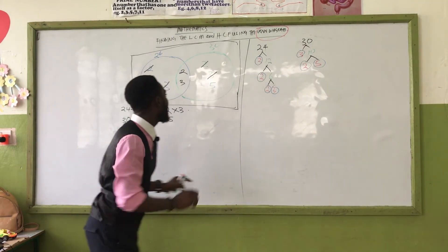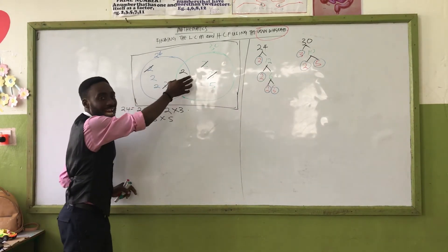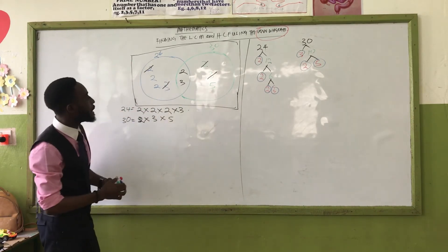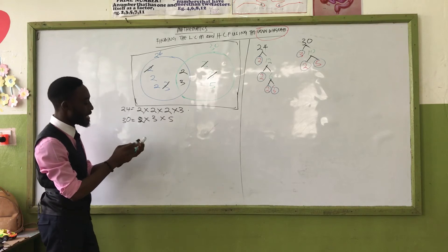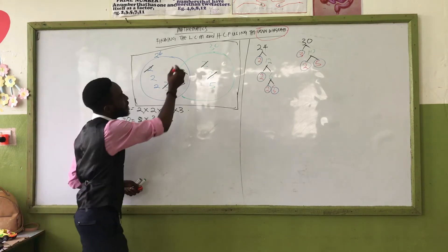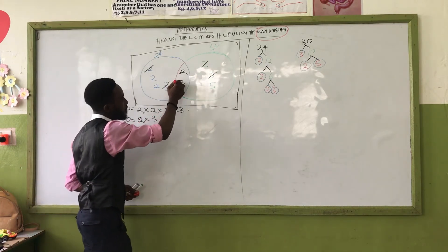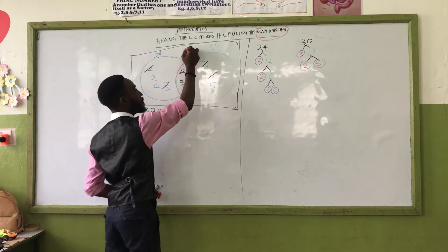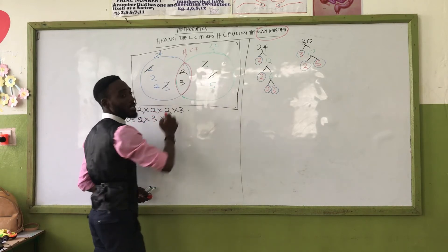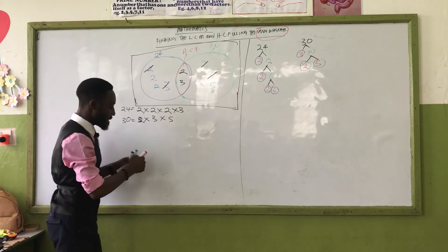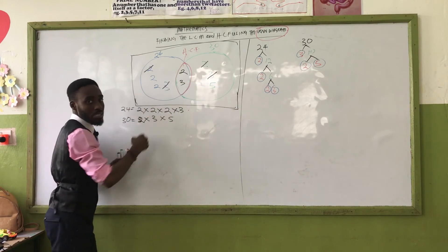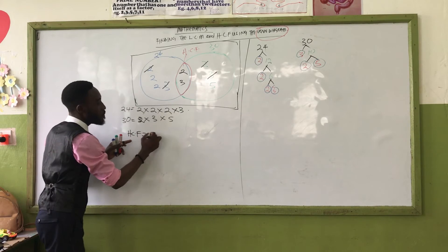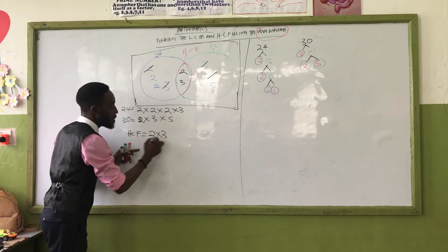The numbers they have in common go in the middle. Therefore, the numbers in the shared section give us the HCF. So when I want to find the HCF, I look at what numbers they share in common — put it here. The HCF is going to be 2 times 3, which equals 6.